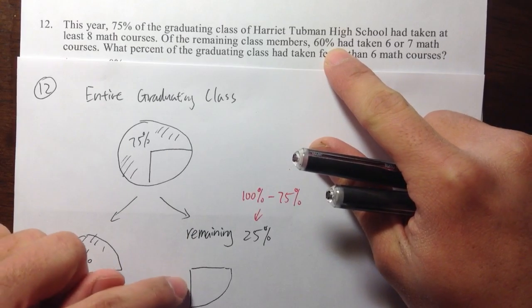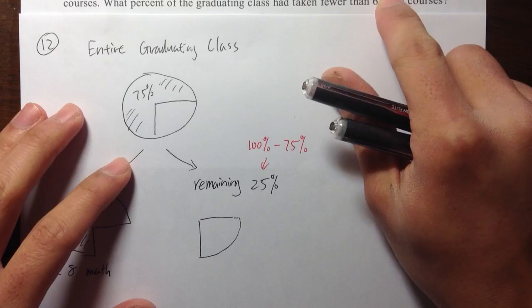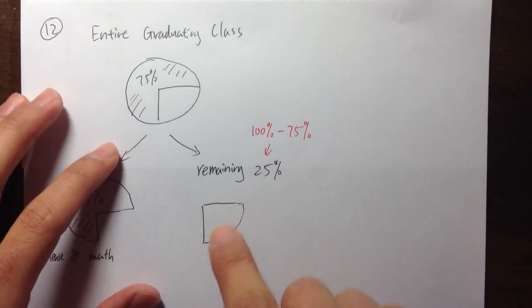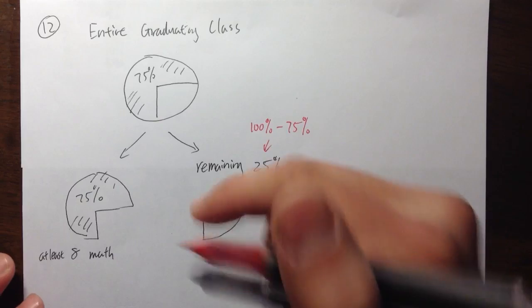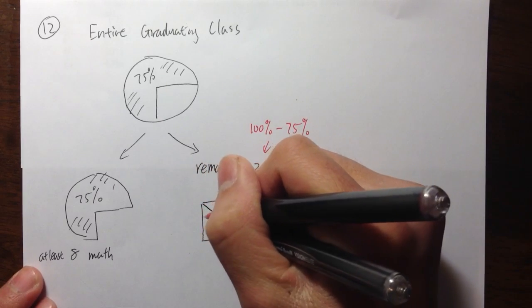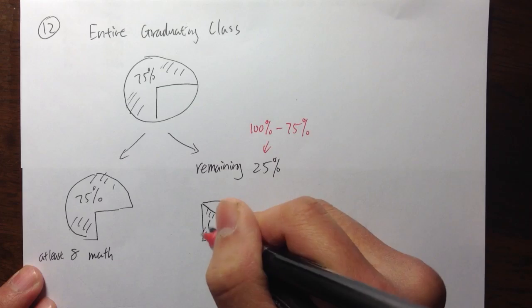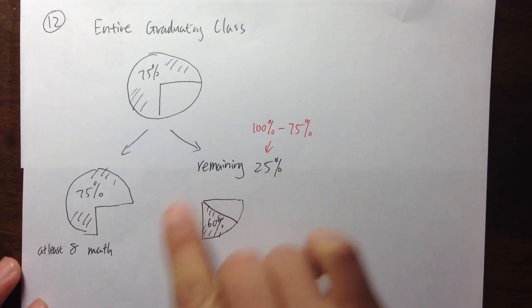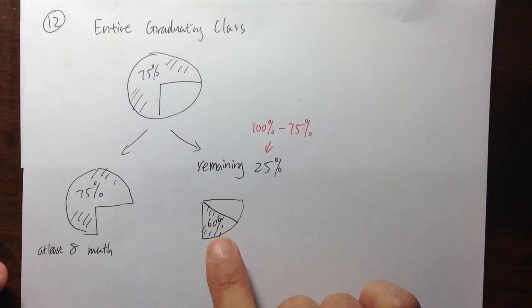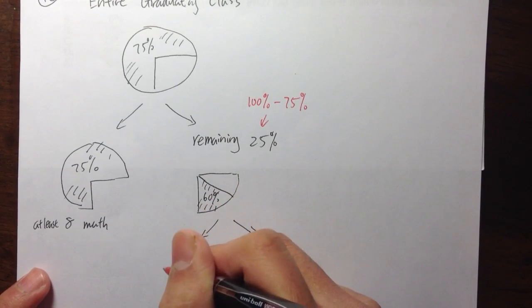60%, so 60% of these people, of these students, they have taken either six or seven math classes. So I'm going to divide this into 60%. Let me draw the 60%. So notice, this is 60% of this part, of this quarter pieces. So again, I'm going to divide into two pieces, two parts.